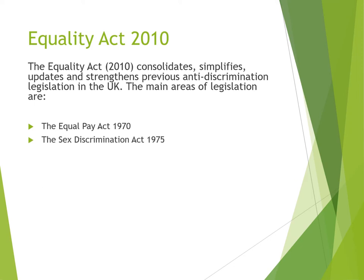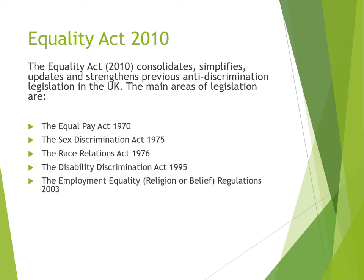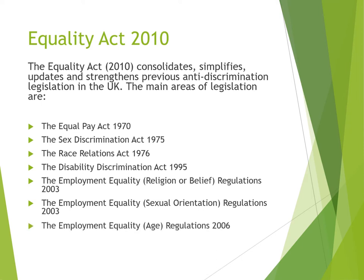We've also got the Sex Discrimination Act, discriminating against people because of their gender; race relations, because of the colour of their skin or ethnicity; the Disability Discrimination Act of 1995, stopping people being discriminated against because of a disability; the Employment Equality Religion or Belief Regulations of 2003; the Sexual Orientation Regulations of 2003; and the Employment Equality Age Regulations, which prevent discrimination because of age — particularly affecting older members of the public.